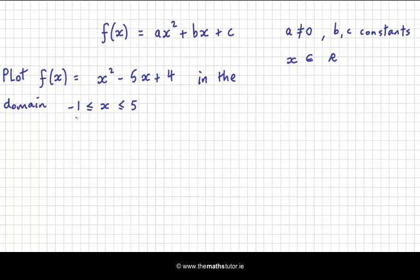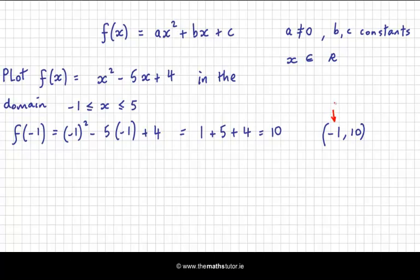Now in practice we only need to substitute in the whole number values, so that'll be minus 1, 0, 1, 2, 3, 4 and 5. So f of minus 1 is the first number we want to substitute in, and that's equal to minus 1 squared minus 5 times minus 1 plus 4, which is, when we square minus 1 we get plus 1. Minus 5 by minus 1 gives me plus 5 plus another 4 is 10. So our ordered pair is minus 1 and 10. The minus 1 is my x coordinate and the 10 is my y coordinate. Minus 1 is my input and 10 is my output.